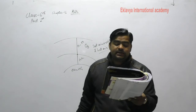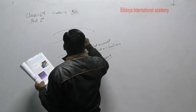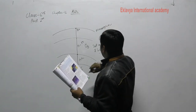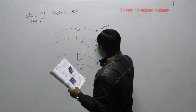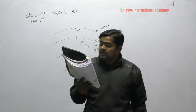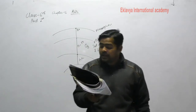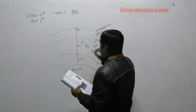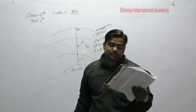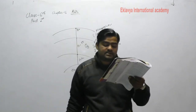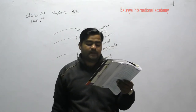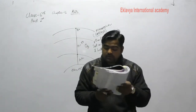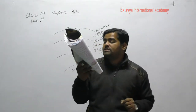The mesosphere extends from 50 to 80 km above the Earth's surface and lies directly above the stratosphere. It is known as the coldest part of the atmosphere. Most meteors burn up in this layer after entering the Earth's atmosphere and before reaching the Earth's surface.